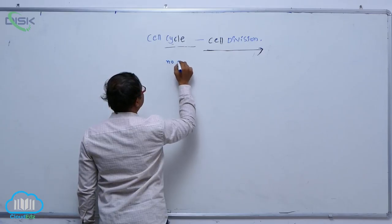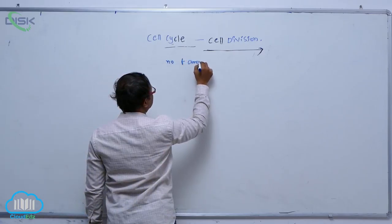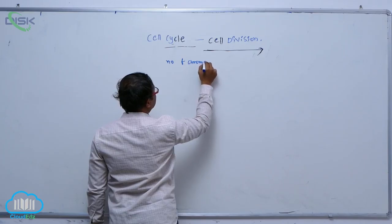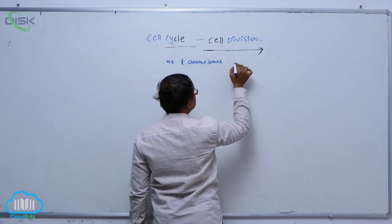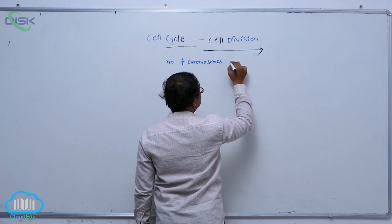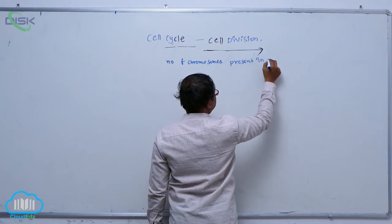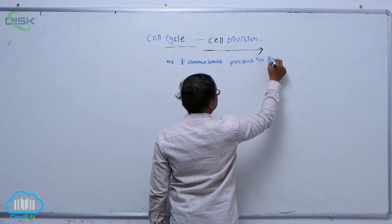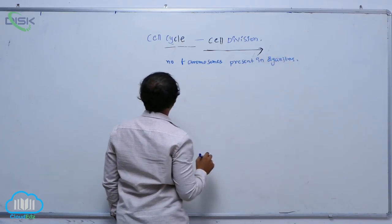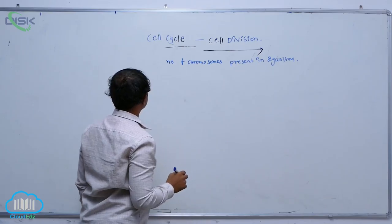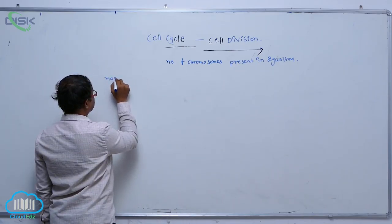Number of chromosomes present in organisms. First one: name of organism.